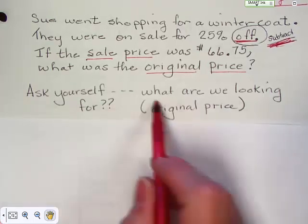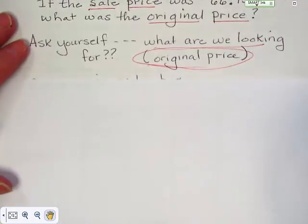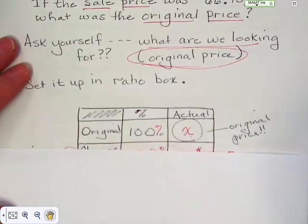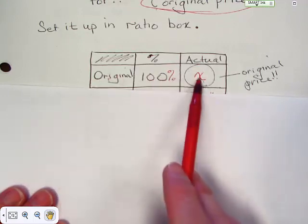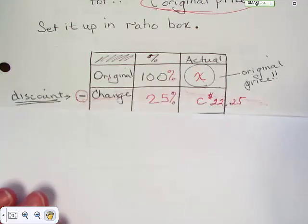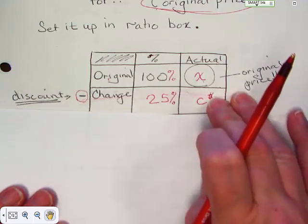Okay. So we're looking for original price. So let's set up our ratio box. We have original hundred percent, we don't know. We don't know what it started at.